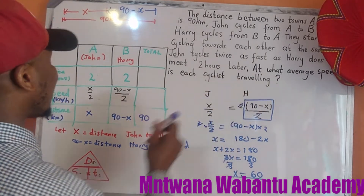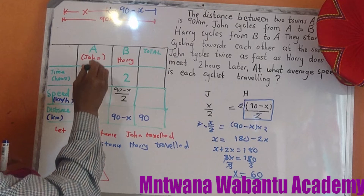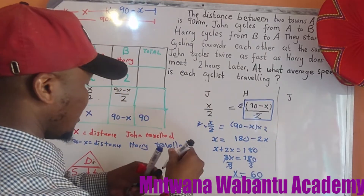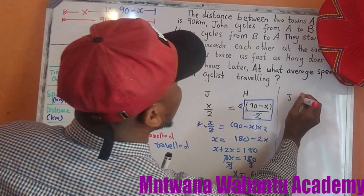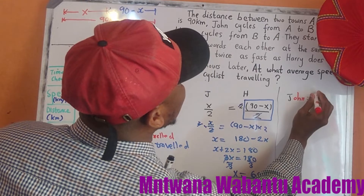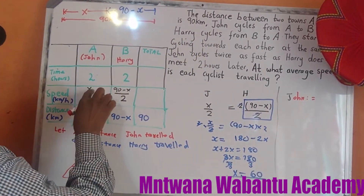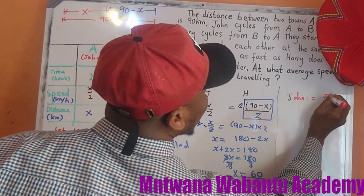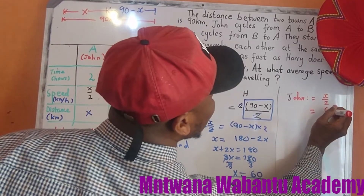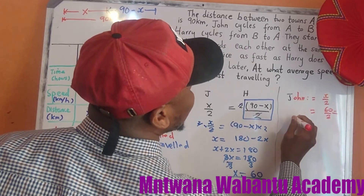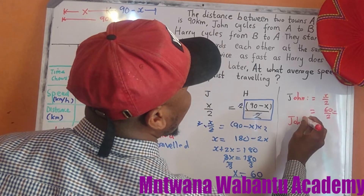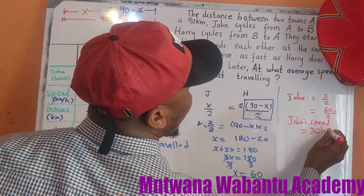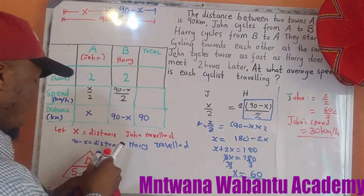Now we can find each person's speed. For John, his speed equals x over 2. Since x equals 60, John's speed equals 60 over 2, which equals 30 km/h.